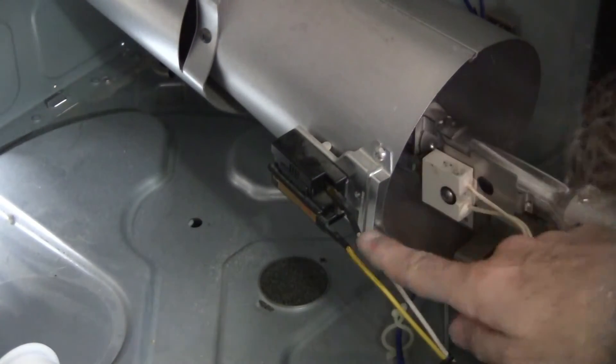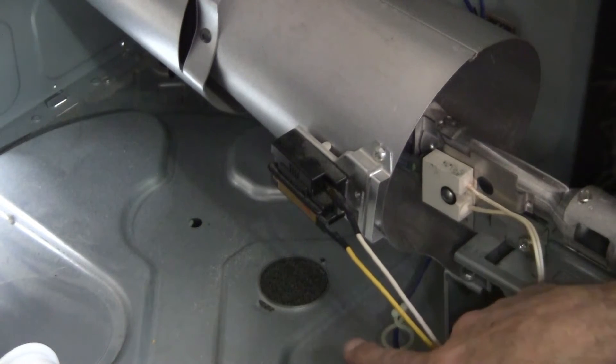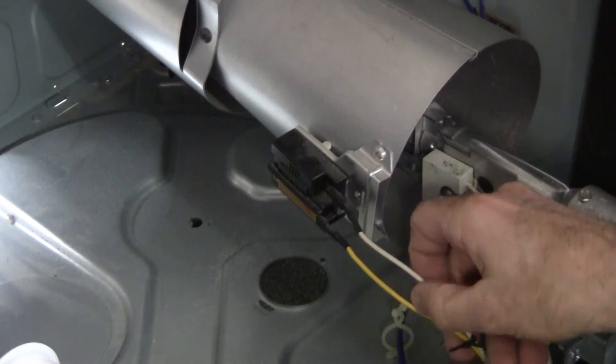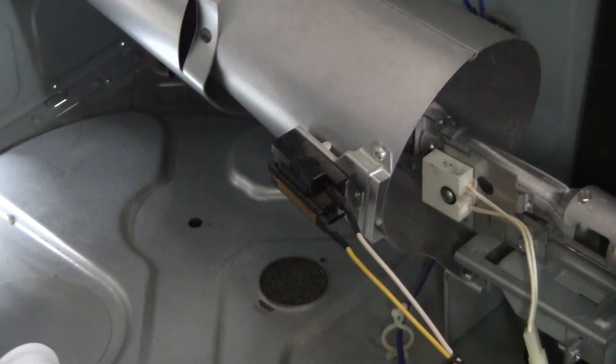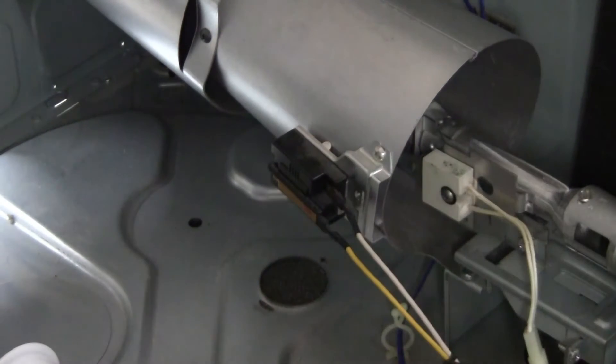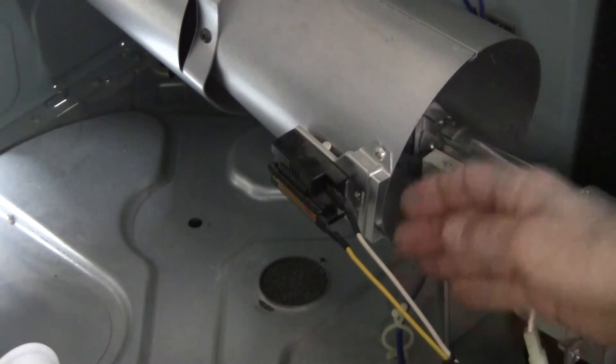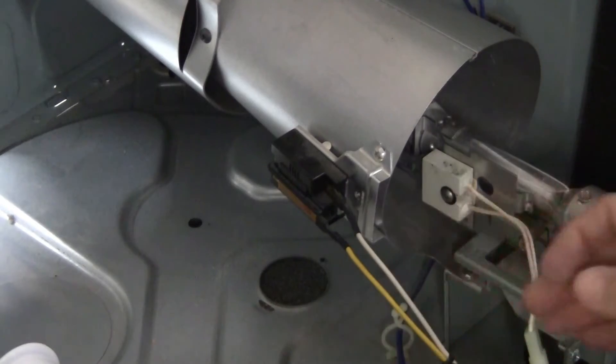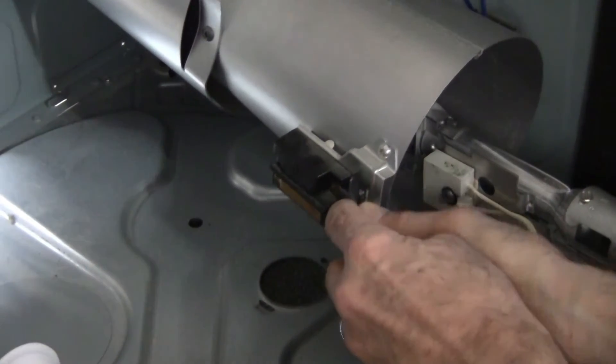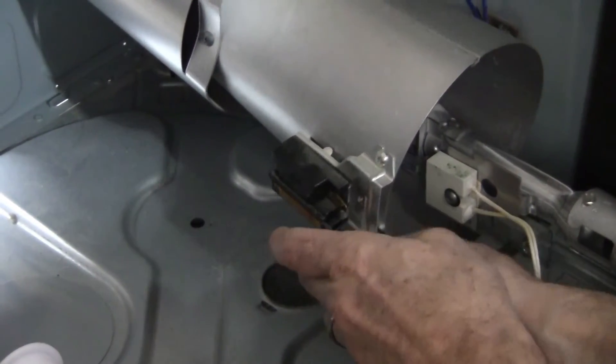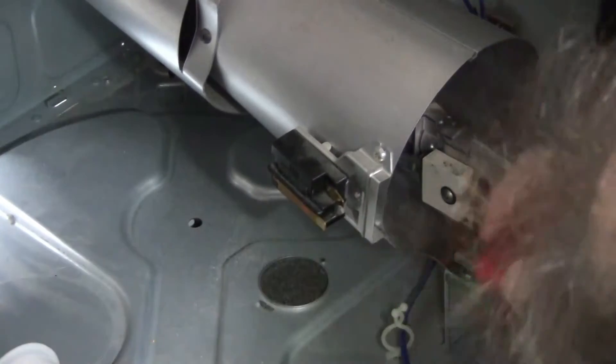There are two electrical connections: white is on the top, yellow is on the bottom. We want to make a note of that. You could take your cell phone, take a picture, but for our purposes, white is on the top, yellow is on the bottom. We're going to pull out the electrical connections and set those aside.